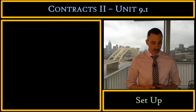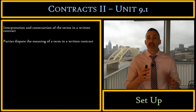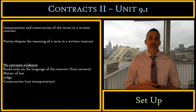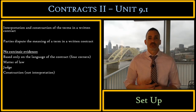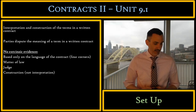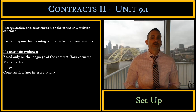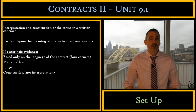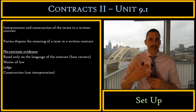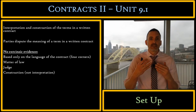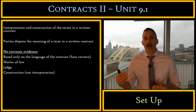Let's set ourselves up for this unit. We're going to be talking about interpretation and construction of contractual terms. We'll have a written contract, and the parties have differing interpretations of a contractual term. Sometimes the parties will not have any type of extrinsic evidence — they'll just disagree on the reading of the contract. This is called construction. When you have no extrinsic evidence and you're just looking at the document itself, that is called construction. This is a matter of law, which means the judge will do this alone without the help of a jury.